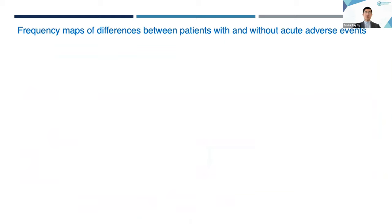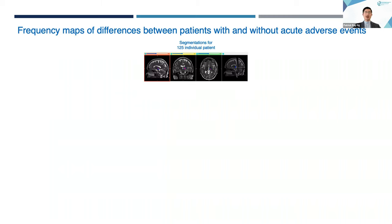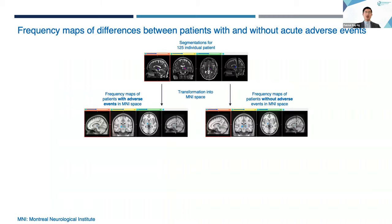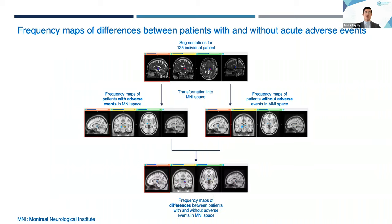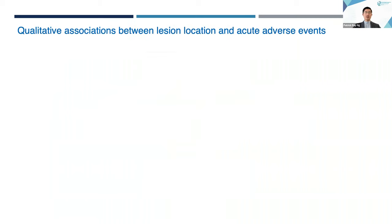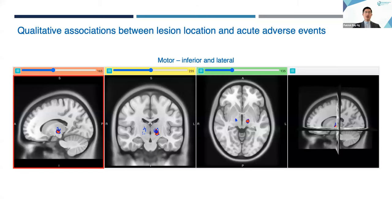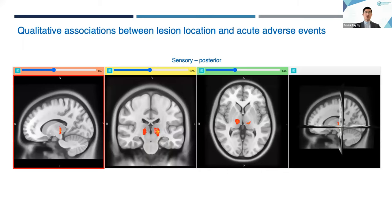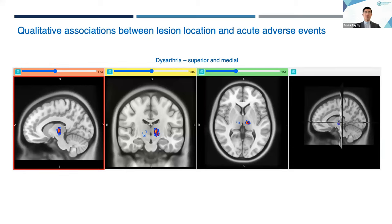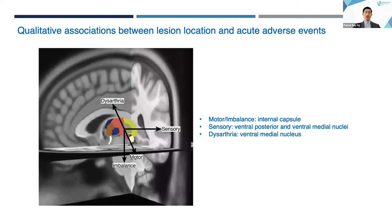In addition to analyzing volumes, we investigated lesion location with frequency maps, or heat maps. We took segmentations of our 125 patients and transformed them into MNI space, a standardized atlas space. We then aggregated patients with and without adverse events into two separate frequency maps, and performed a simple difference between these maps to identify voxels contributing to adverse events. Qualitatively, lesions causing motor deficits were more inferior and lateral, sensory deficits more posterior, dysarthria more superior and medial, and imbalance more inferior. These findings suggest motor deficits and imbalance may involve the internal capsule, sensory deficits may involve the ventral posterior and ventral medial nuclei, and dysarthria may involve the ventral medial nucleus.